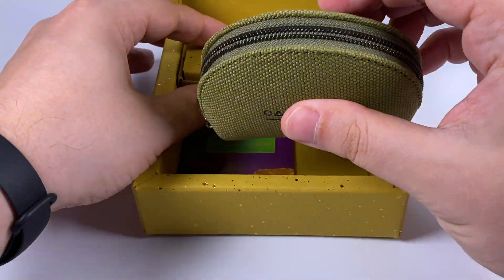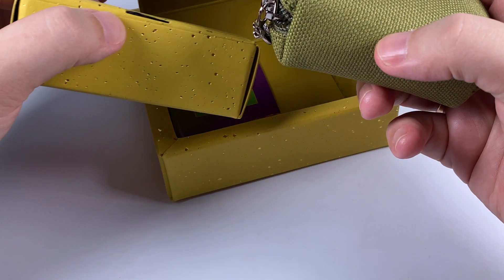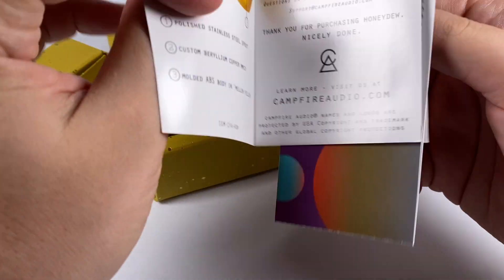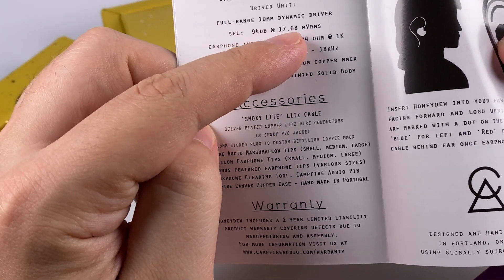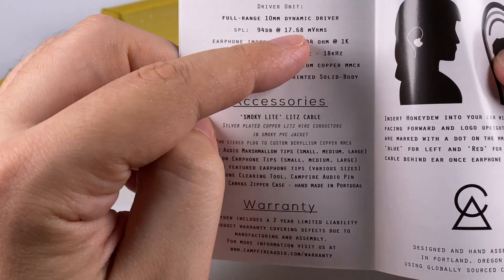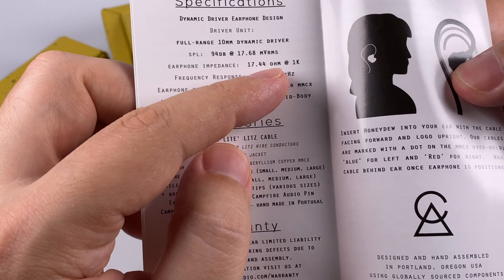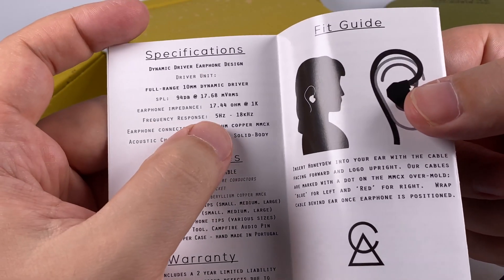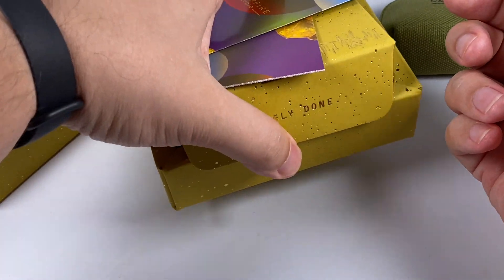Inside there is a case, this is actually a bit paler shade of green, and box with accessory set. And manual with warranty card, so 17.68 millivolts RMS, and 17.44 ohms of impedance, so dynamic driver model is more sensitive. And also 5 Hertz to 18 kilohertz of frequency response.